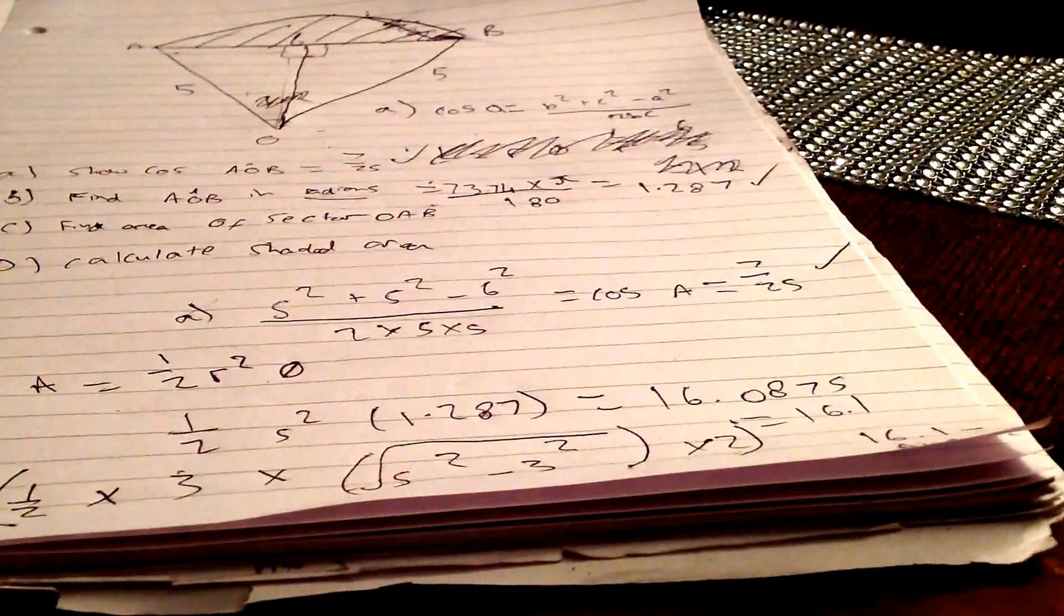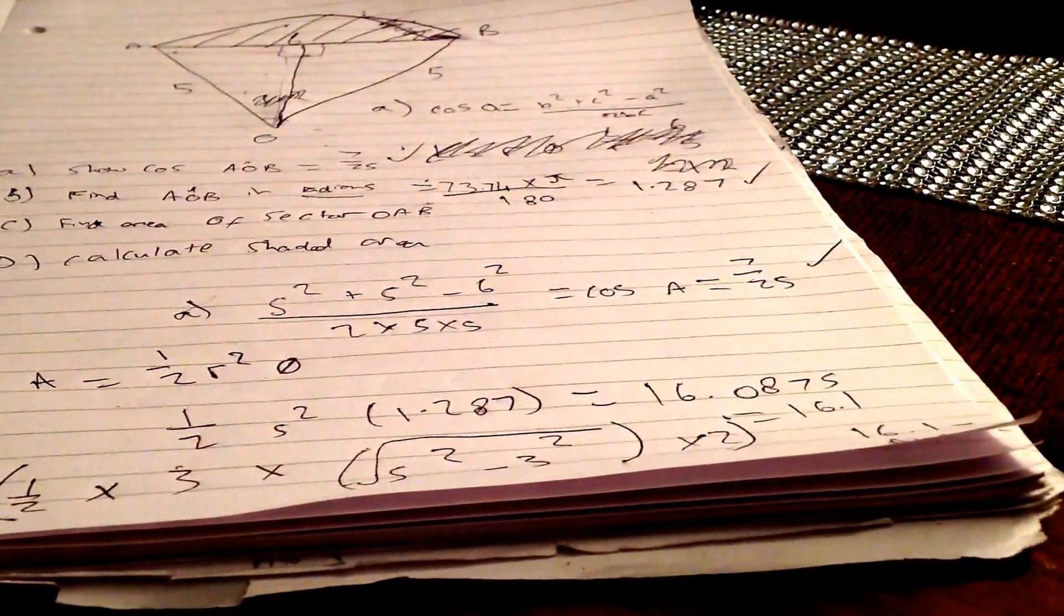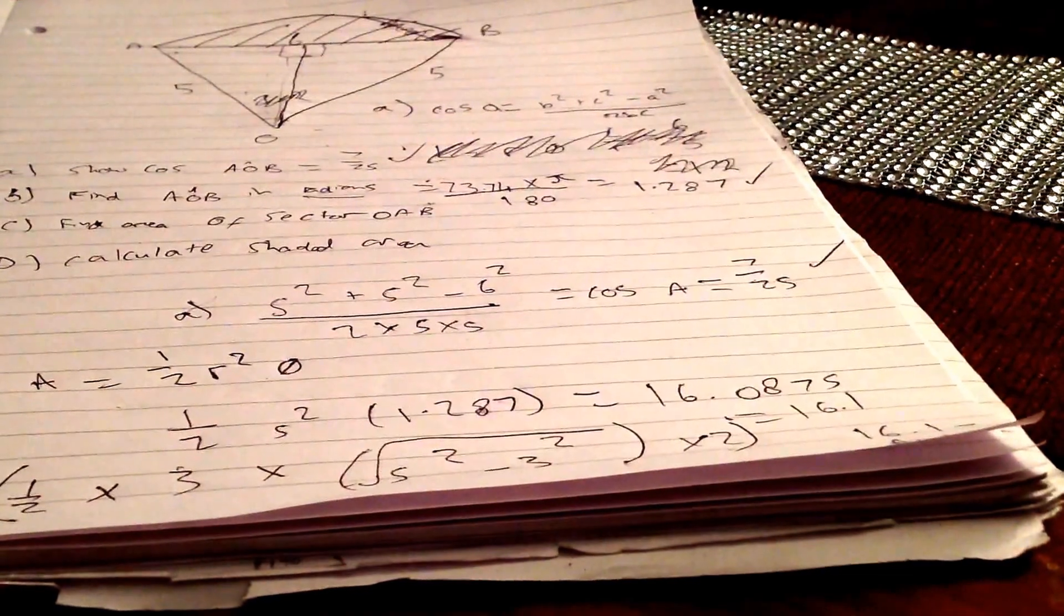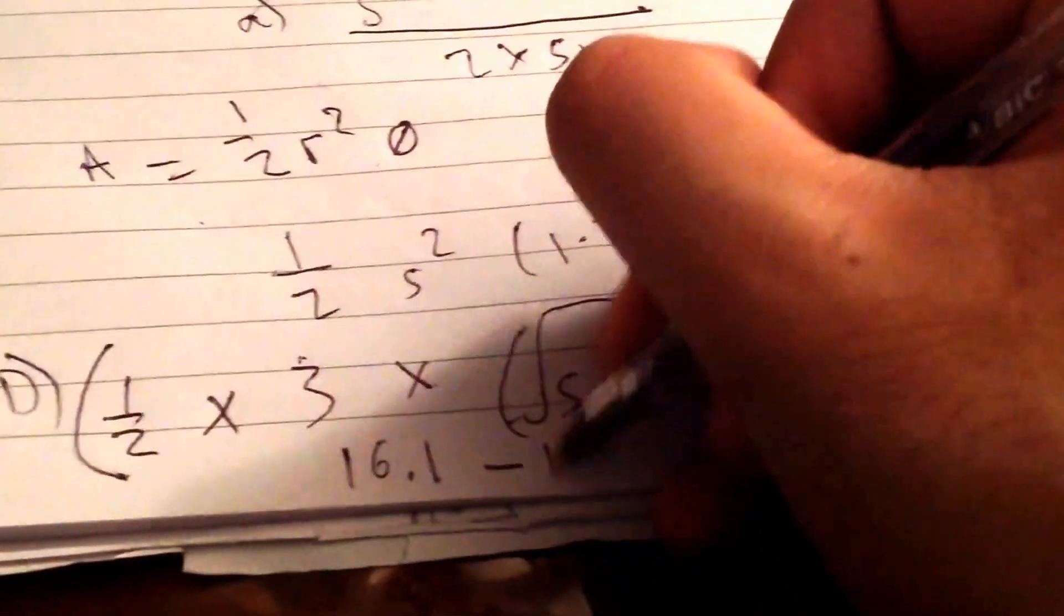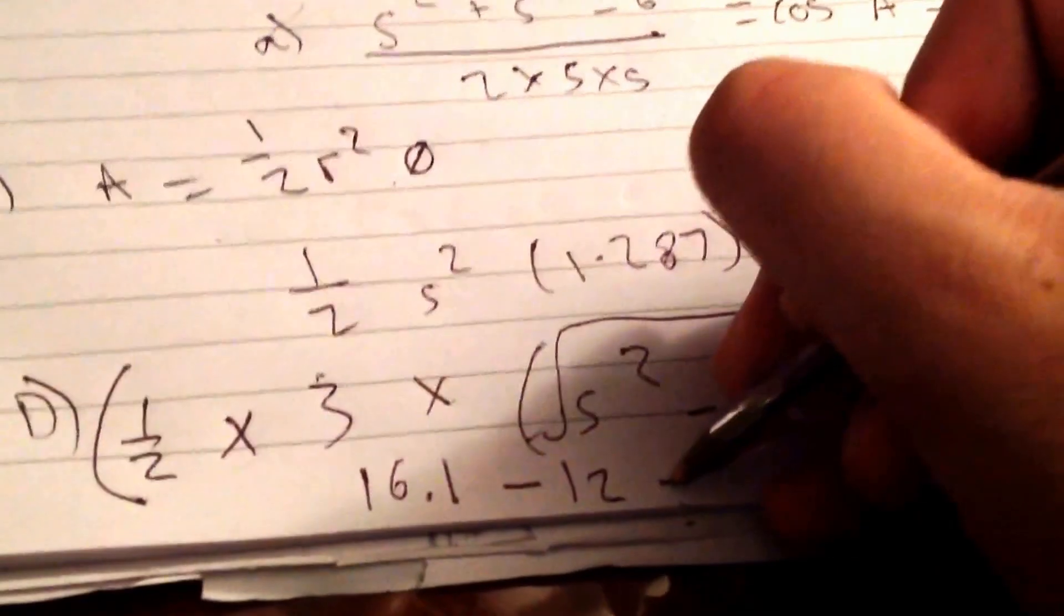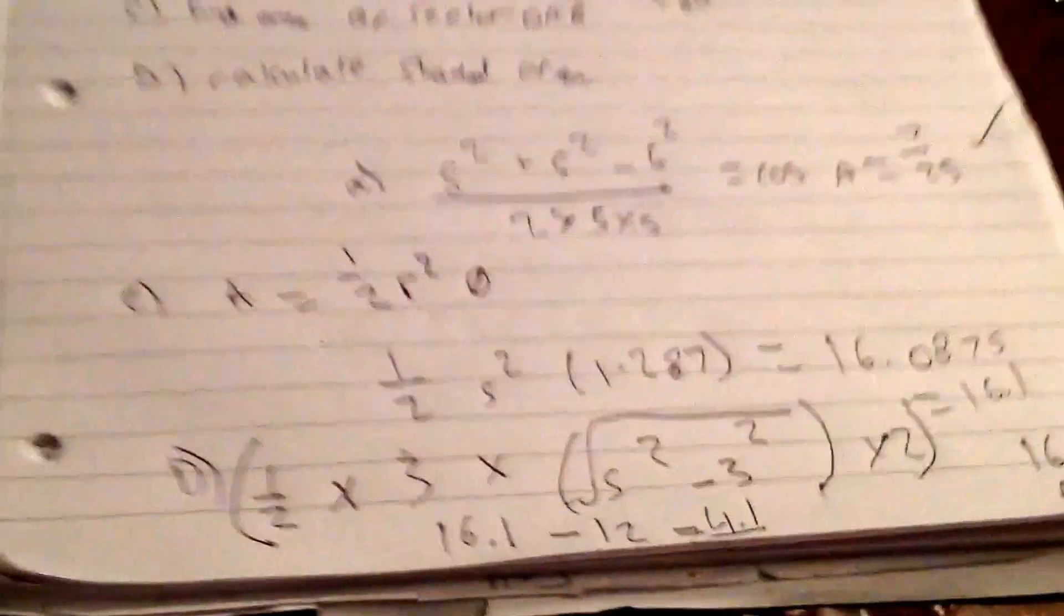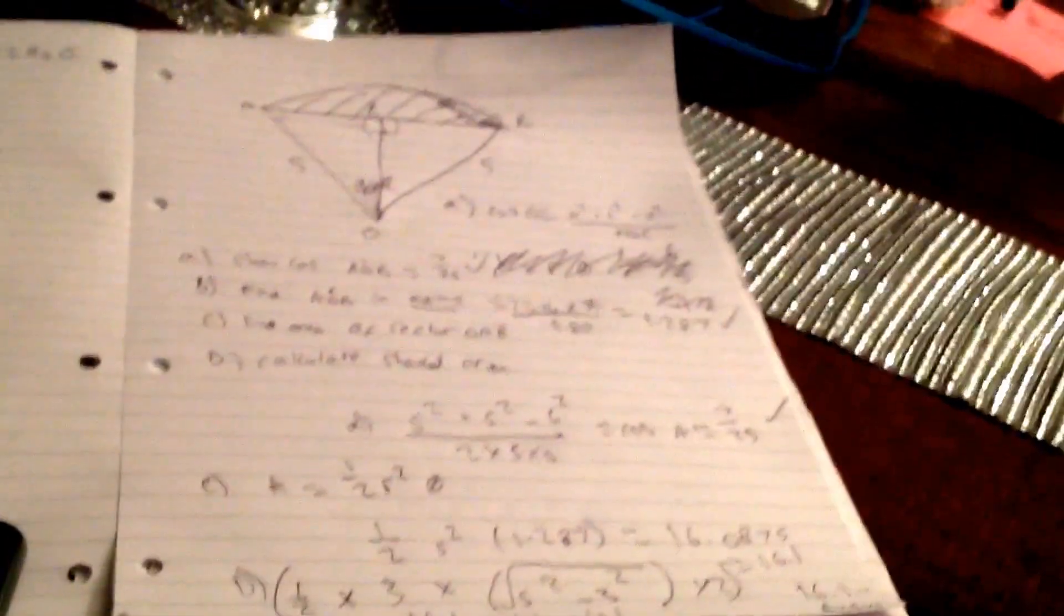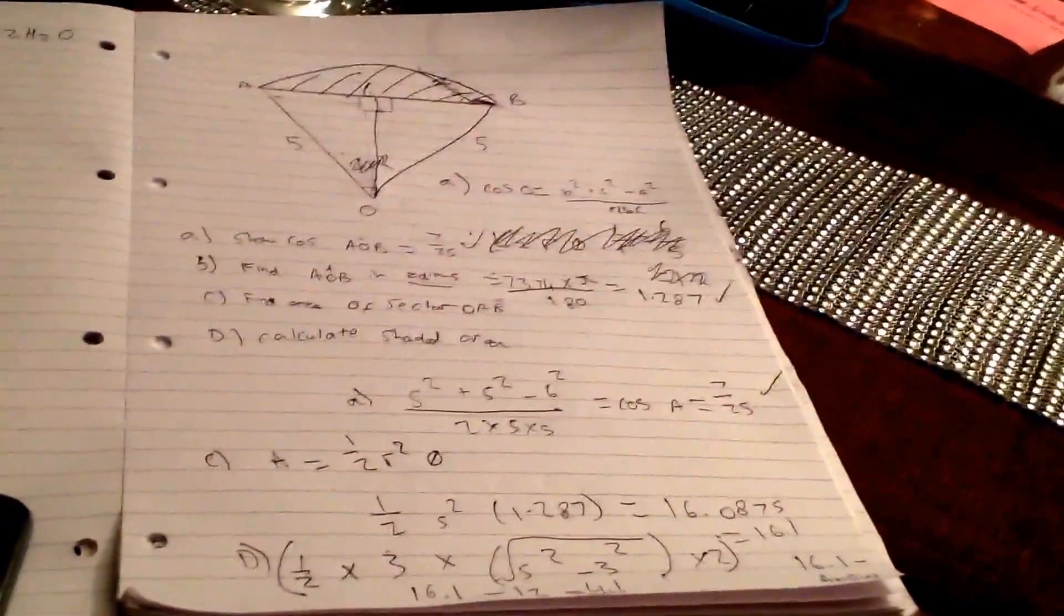If we plug everything into a calculator: 0.5 times three times four, times that by two, you get twelve. So 16.1 minus twelve equals 4.1, and that's your final answer. I hope that's been some insight and helped you. Sorry it's a bit messy, but that's the best I could do. See ya.